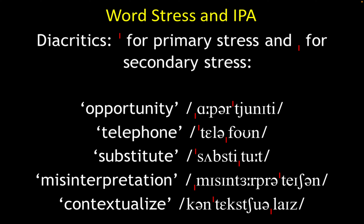Concerning the International Phonetic Alphabet, there are two diacritics used to mark stress. The first diacritic marks primary stress — the most stressed syllable in a word. If you have a long word, you might also have a secondary stress, which is marked with a second diacritic.